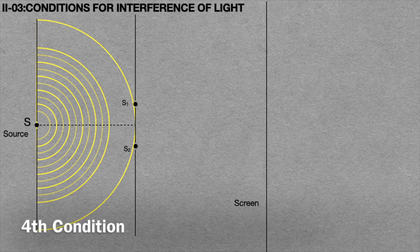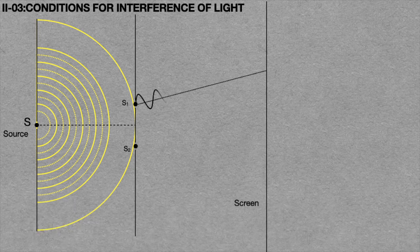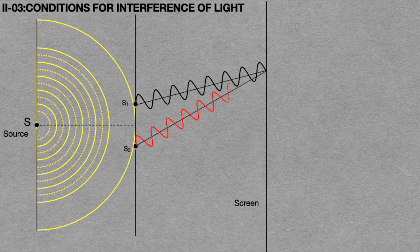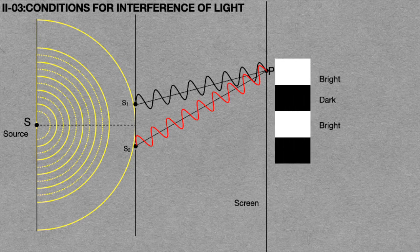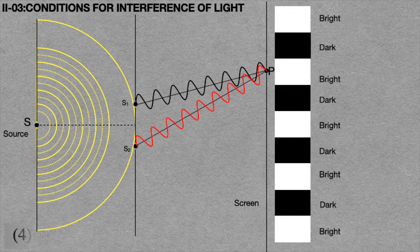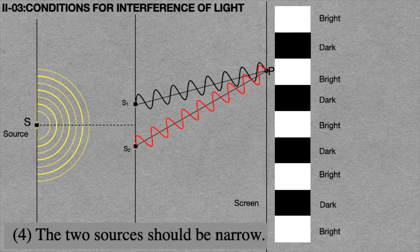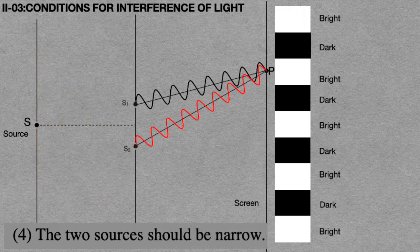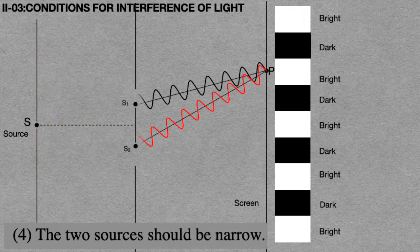The fourth condition is shown in this animation. If the light waves from sources S1 and S2 form an interference pattern at point P on the screen, then the two sources should be narrow. In case the two sources are not narrow, no stable interference pattern is formed on the screen.